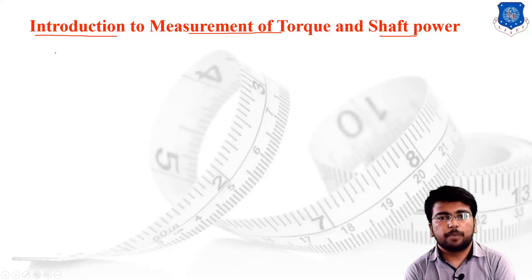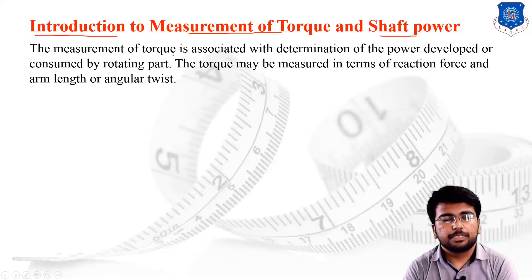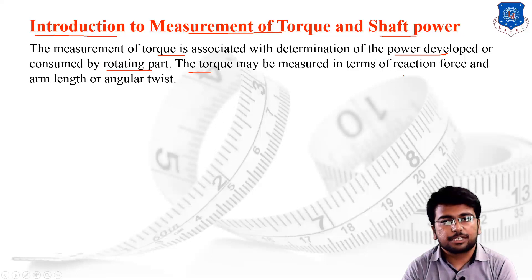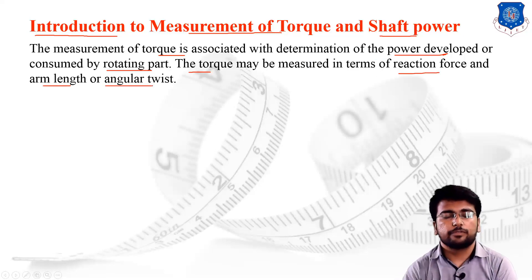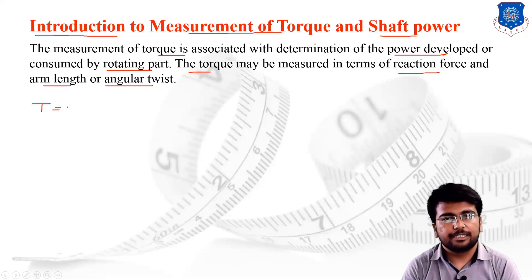For the measurement of torque, we need to determine the power developed or consumed by the rotating part. The torque may be measured in terms of the reaction force and the arm length, or the angular twist. We write torque T = F × L, where F is the reactive force and L is the arm length.